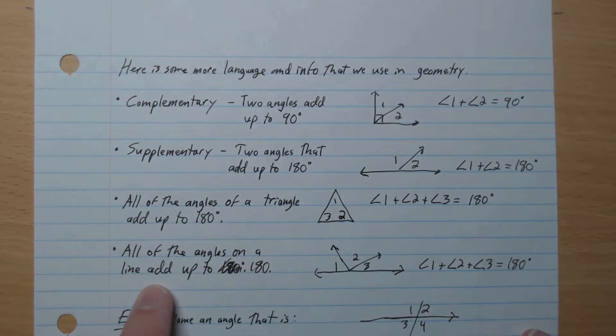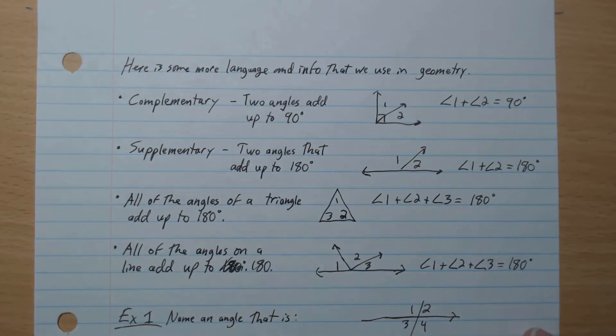And all of the angles on a line add up to 180. So you have a line here like this, and all of these angles 1, 2, 3, this adds up to 180.